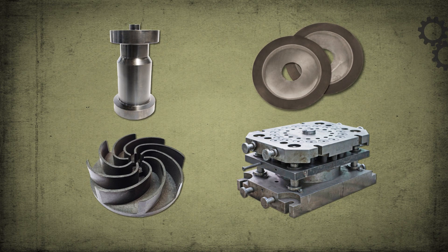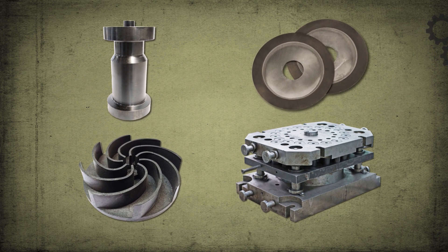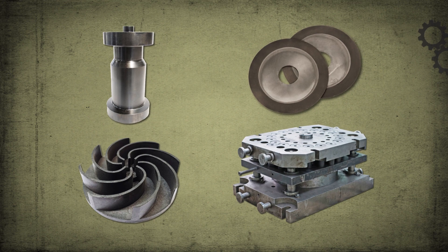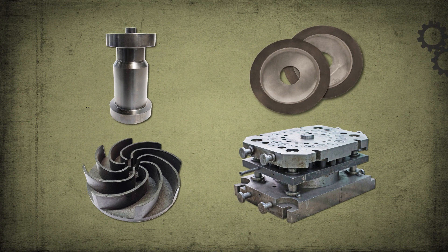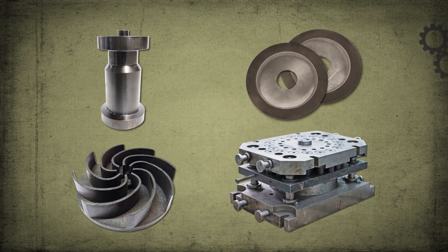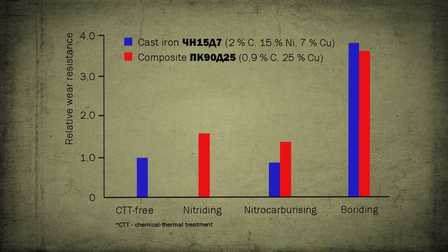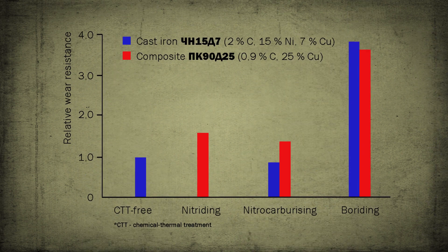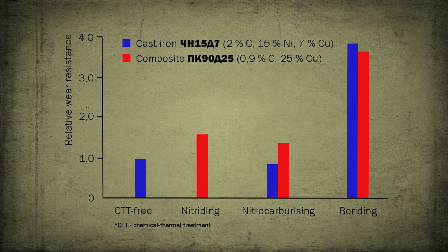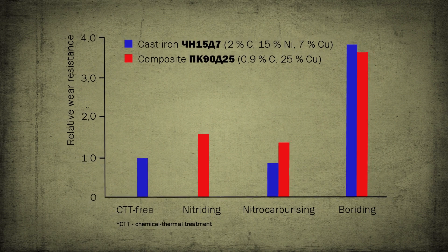Buridine is used for high-speed cutting and punching tools, parts of crushing and screening machines, drilling rigs, and centrifugal pumps. The wear resistance of parts after buridine increases by 2–10 times.